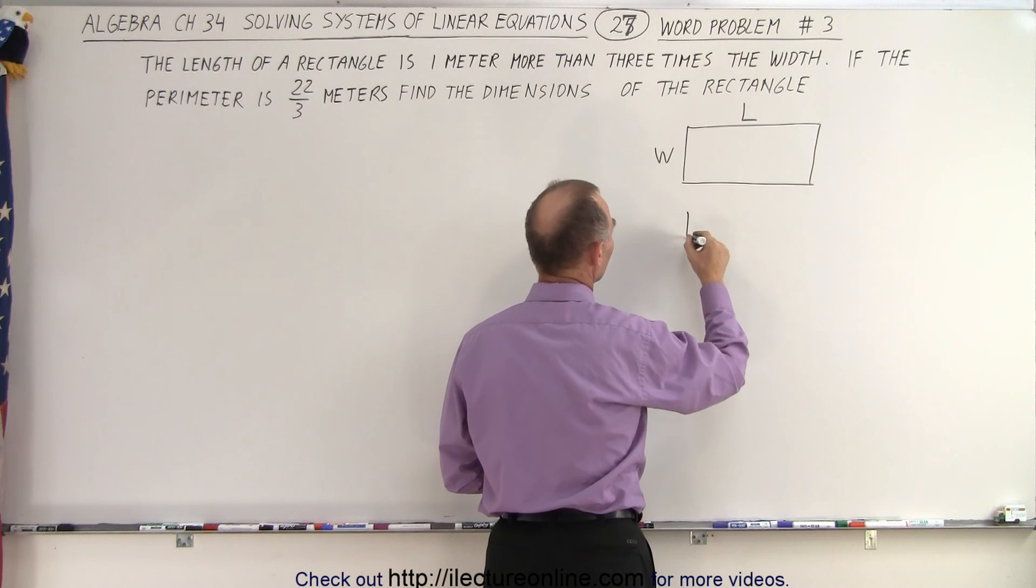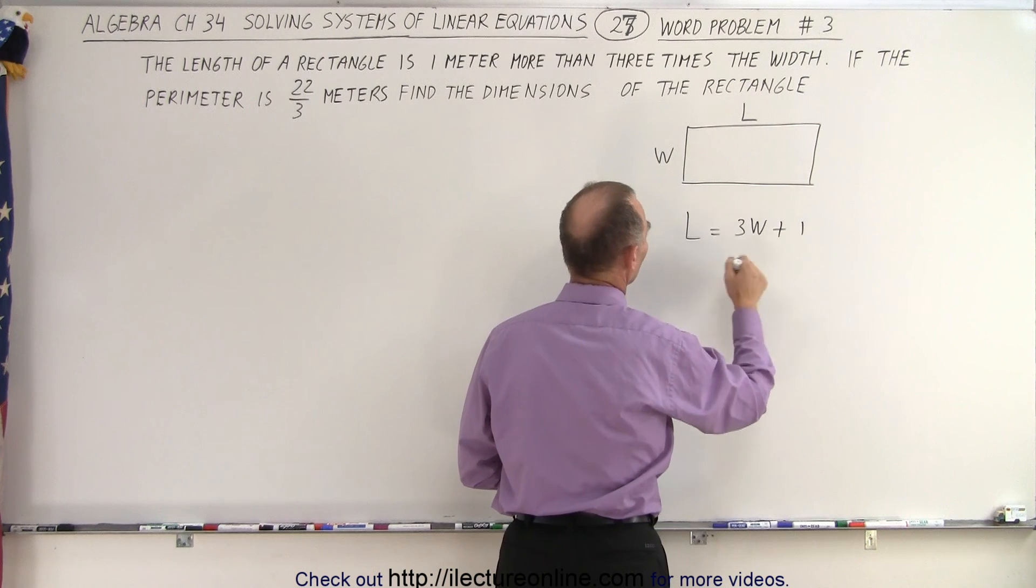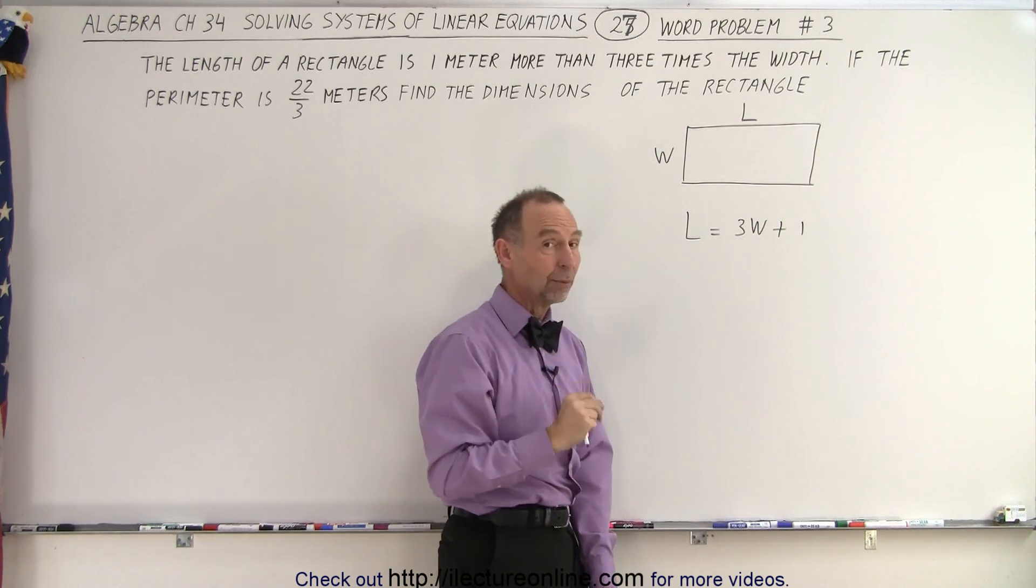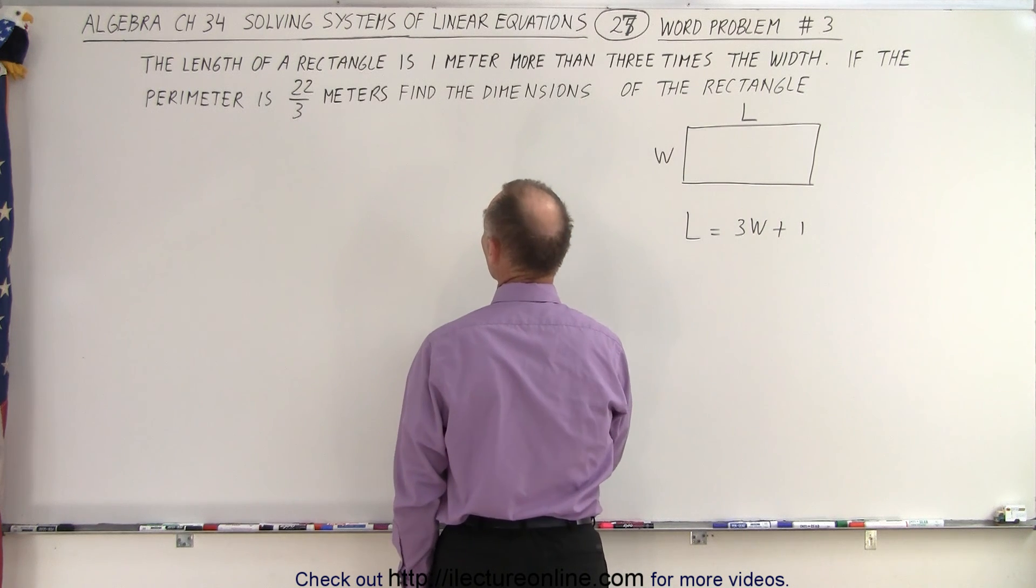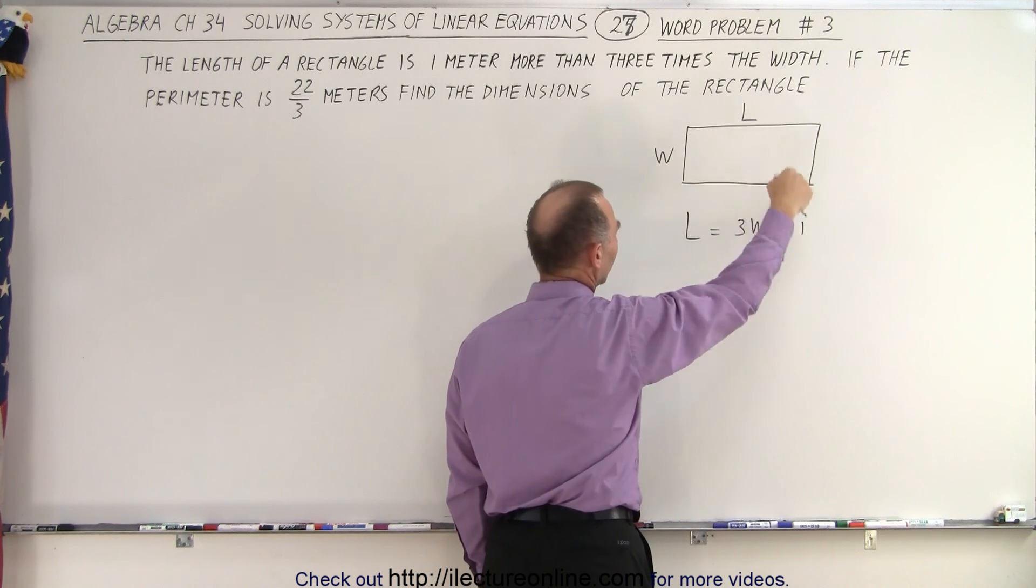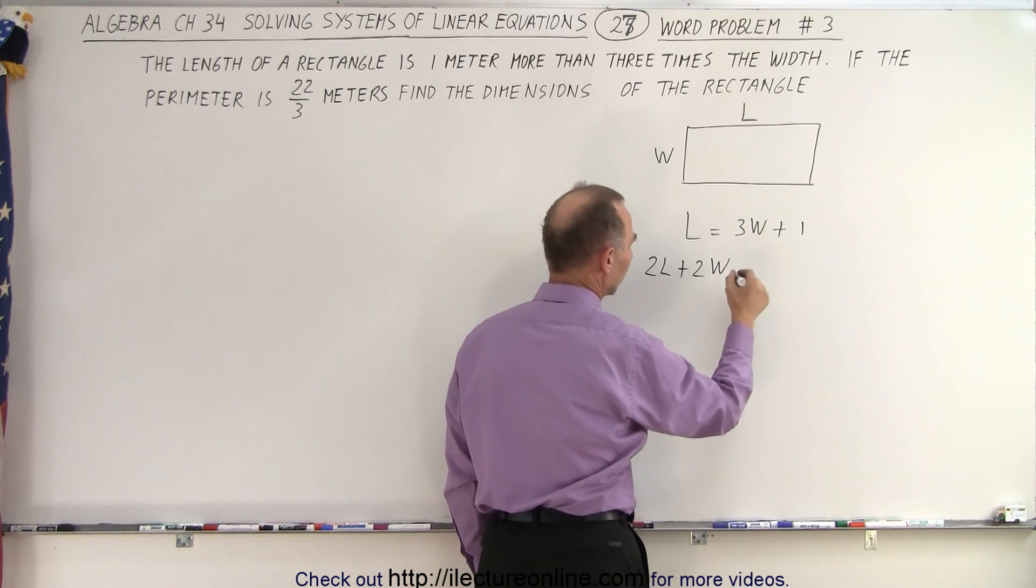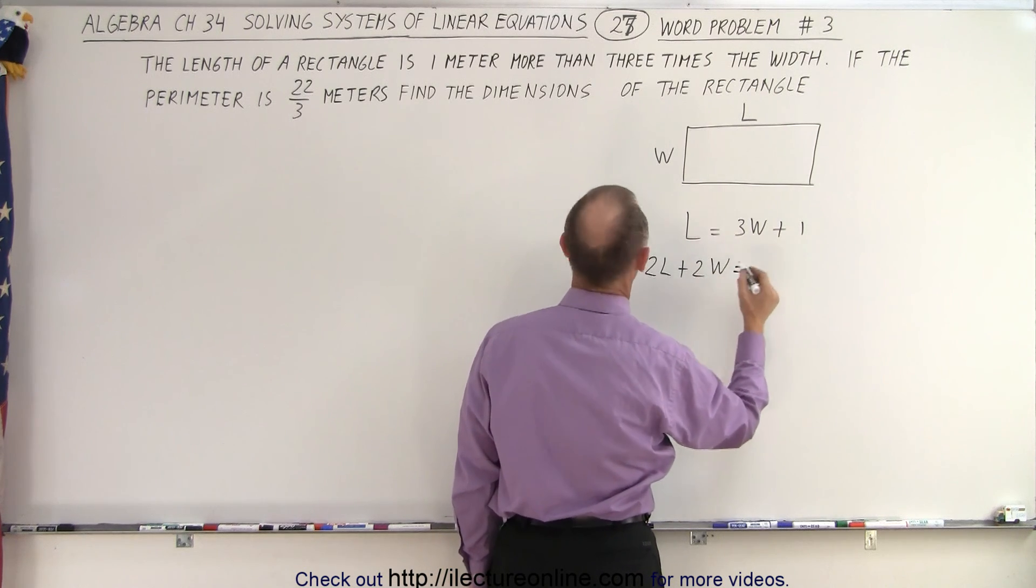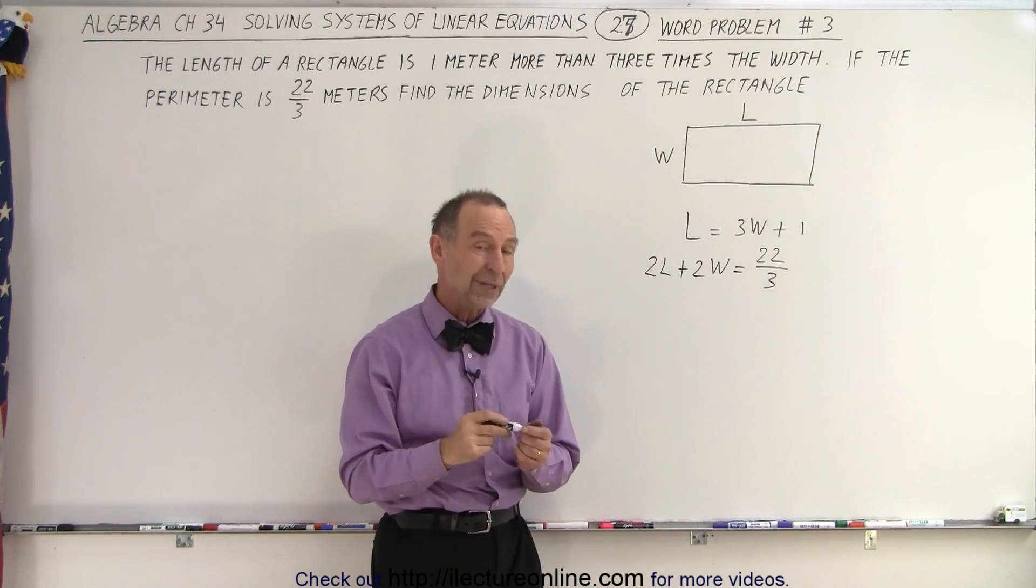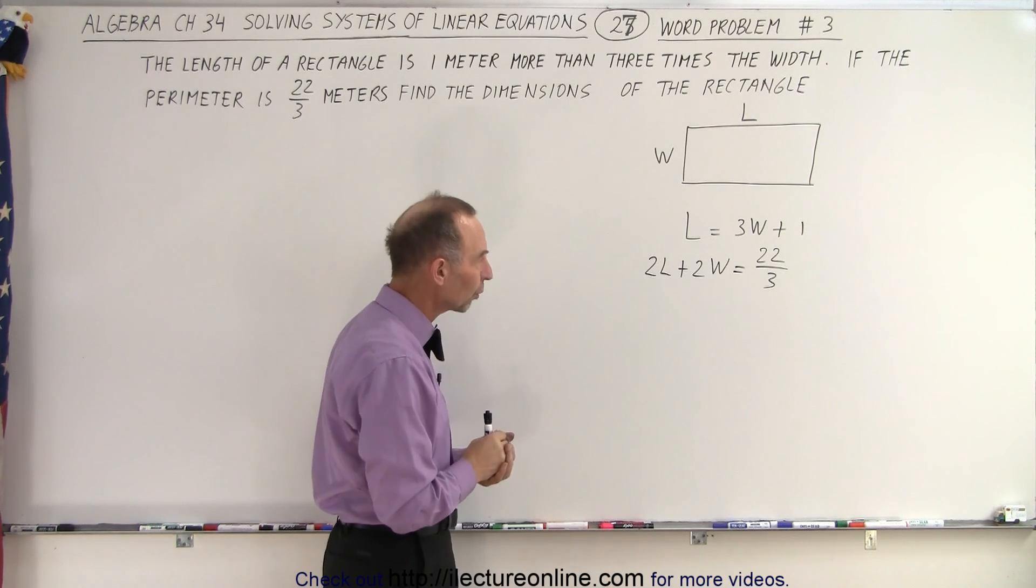So the length is equal to three times the width plus one. So the length is one more than three times the width. Then secondly, the perimeter is 22 over 3 meters. So the perimeter, that would be twice the length and twice the width. So 2L plus 2W, that's the full perimeter, is equal to 22 over 3. And there's the two equations that we need to solve simultaneously. We need to find the point of intersection of those two equations.